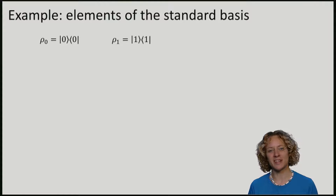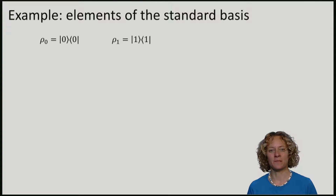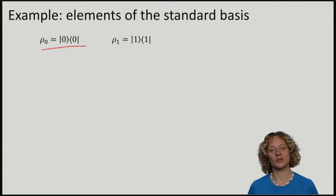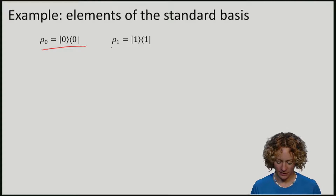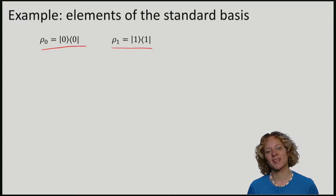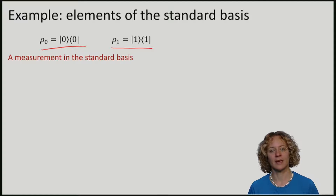Let's now consider some examples of the trace distance. We want to compute the trace distance between two states in the standard basis, namely between rho being the |0⟩ state and rho being the |1⟩ state. We already know, in fact we've calculated in the first homework, that there exists a measurement that distinguishes these two states, namely a measurement in the standard basis.